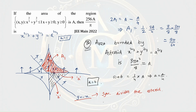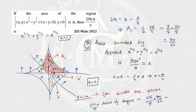The area of the shaded region is simply half times 9π/64. We are asked to find the value of (256/π) times the area of the shaded region, so we get (256/π) × (9π/128). Simplifying this gives 36, which is the correct answer. I hope you understood this question.